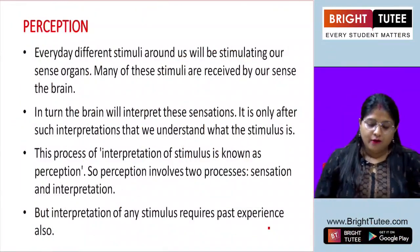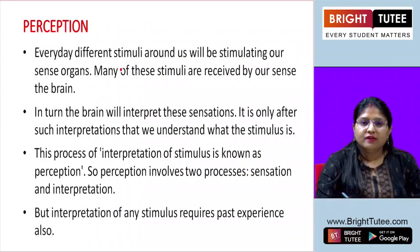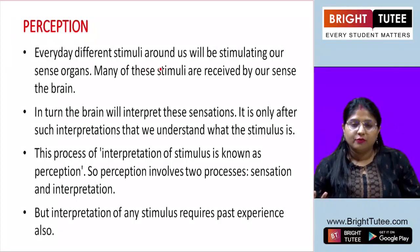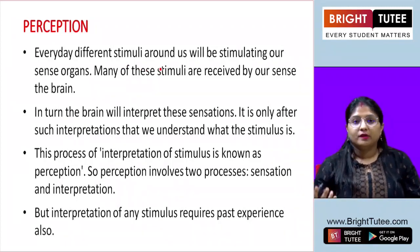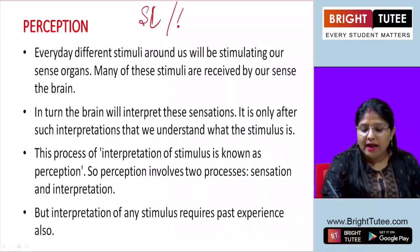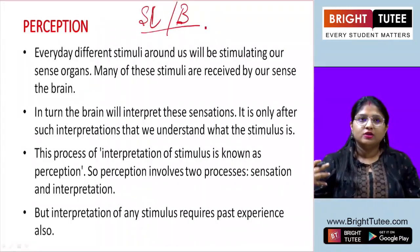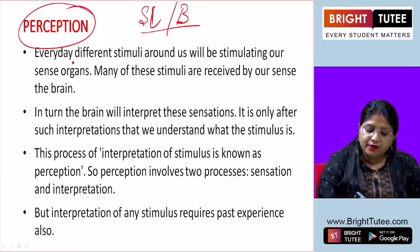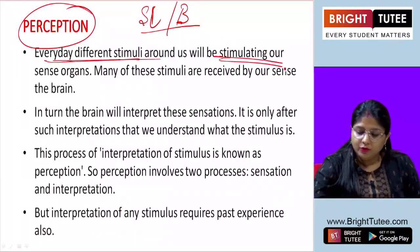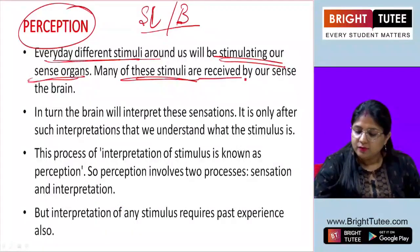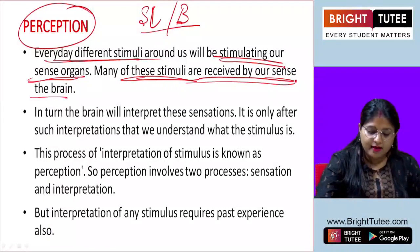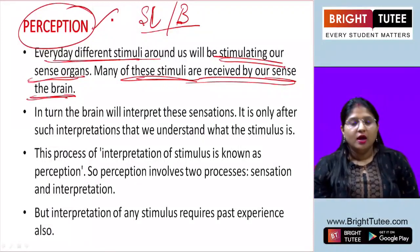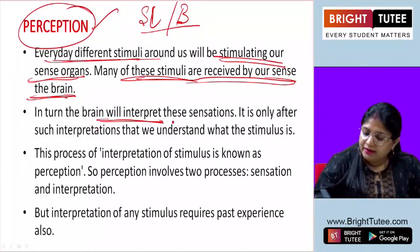Next we have perception. It is very important to understand that every stimulus around us stimulates our sense organs and we receive certain information from that. But it is very important for us to perceive, and that is where the role of the spinal cord and brain comes in. Every different stimulus around us will be stimulating our sense organs, and many of these stimuli are received by our senses and given to the brain to understand — that's how perception comes into play.